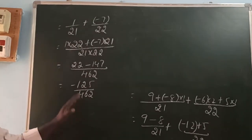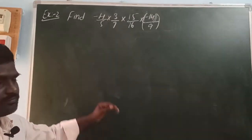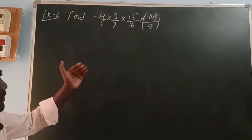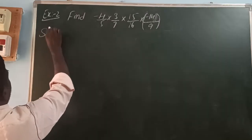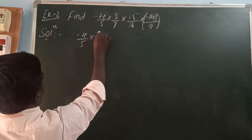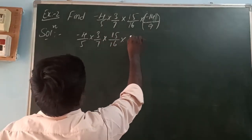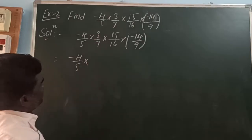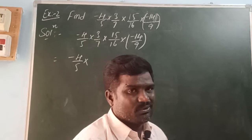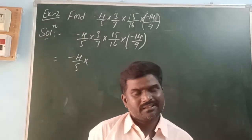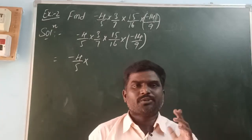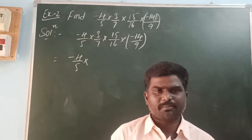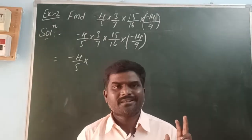Example 2: find (-4/5) × (3/7) × (15/16) × (-14/9). This can be done using more than two methods. The numbers follow 6 properties — natural numbers, whole numbers, integers, rational numbers, and real numbers all follow 6 properties: commutative property, closure property, associative property, identity property, inverse property, distributive property — for binary operations: addition, subtraction, multiplication, division.